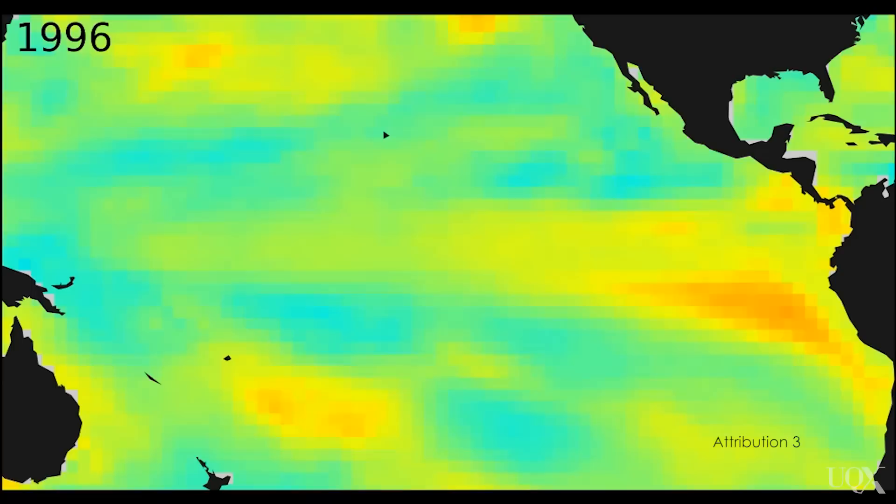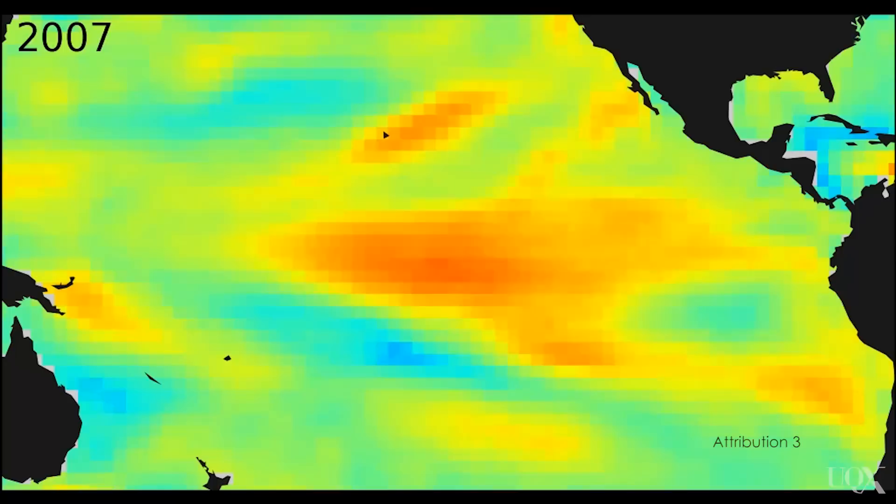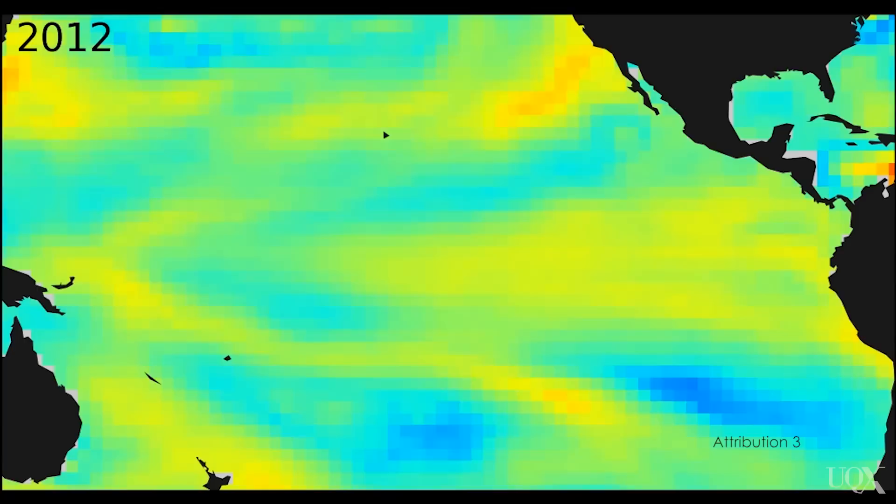One of the biggest is the El Niño cycle. El Niño is a phenomenon in which heat is stored up in the western Pacific and then released to the atmosphere in the eastern Pacific. This happens over the course of a few years. El Niño is not predictable, but we can track it in retrospect through sea surface temperature measurements.